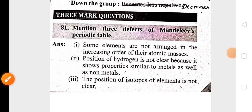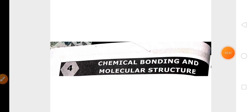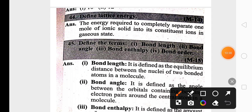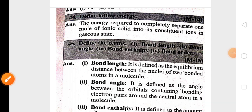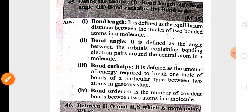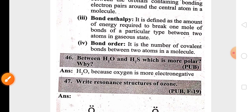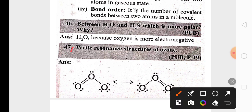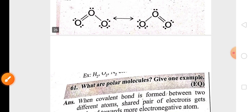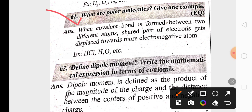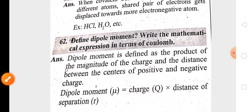The fourth chapter is chemical bonding and molecular structure, which is also a highly important chapter. Important questions include: the definition of lattice energy, and bond parameters like bond length, bond angle, bond enthalpy, and bond order. For two marks, the resonance structure of ozone is highly important. Definitions and examples of polar molecules, and the definition and formula of dipole moment, are highly important for two marks.